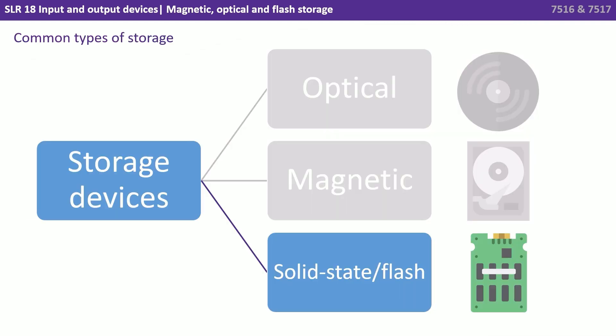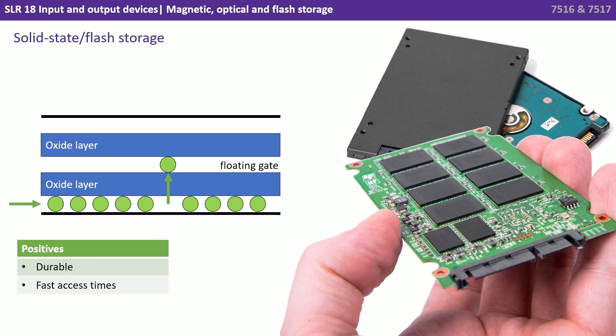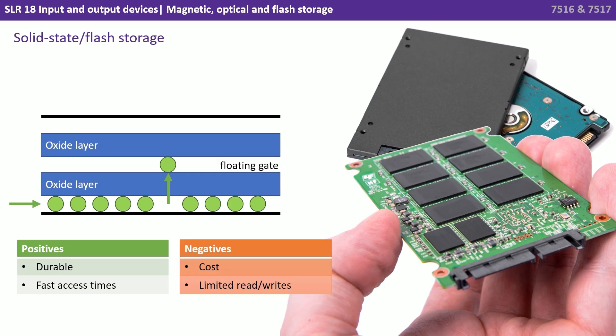And finally we have solid state, or what's also often called flash storage. With this method of storage, data is stored using floating gate transistors. An oxide layer separates the floating gate from the control gate, and the presence or absence of an electric charge in the floating gate determines the binary states — ones and zeros. This charge trapping allows for the reliable storage of digital information in a compact and durable form. It has fast access times, but on the negative side it's actually a relatively expensive form of storage and it does have a limited number of read-write cycles.